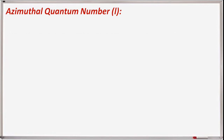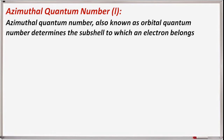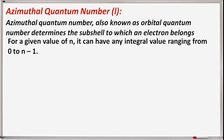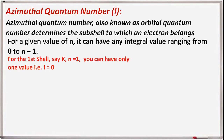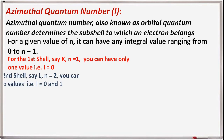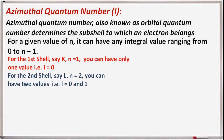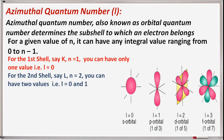The azimuthal quantum number, l, also known as the orbital quantum number, determines the subshell to which an electron belongs. For a given value of n, it can have any integral value ranging from 0 to n minus 1. For the first shell (n=1), there is only one value: l=0. For the second shell (n=2), there are two values: l=0 and l=1.